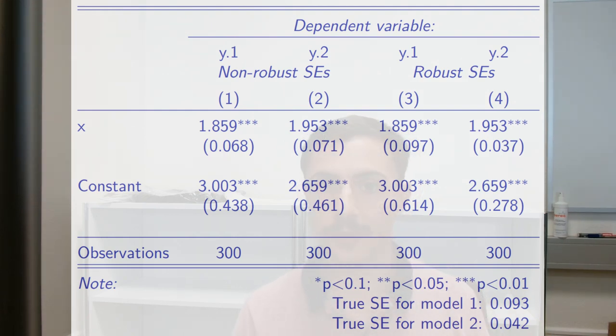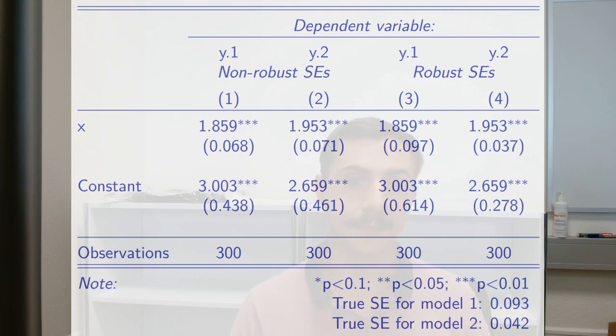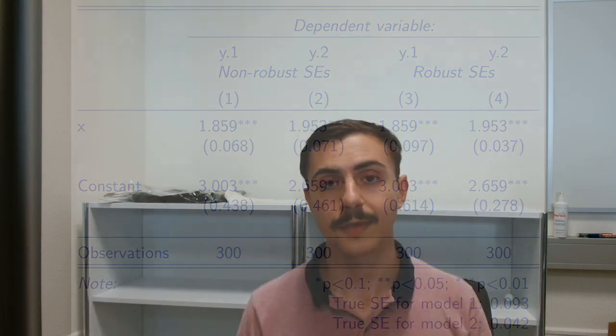Now when we look at the two columns on the right with robust standard errors, we can see that there's a meaningful difference between the two standard errors, just as our intuition told us. The estimated robust standard errors are also much closer to the real standard errors. This showed us that firstly non-robust standard errors will hide differences. Secondly, robust standard errors fix that problem. Thirdly, at least theoretically, the actual standard errors might be smaller or larger depending on your data. In most cases, robust standard errors will tend to be slightly bigger, unfortunately, if you're an applied researcher.